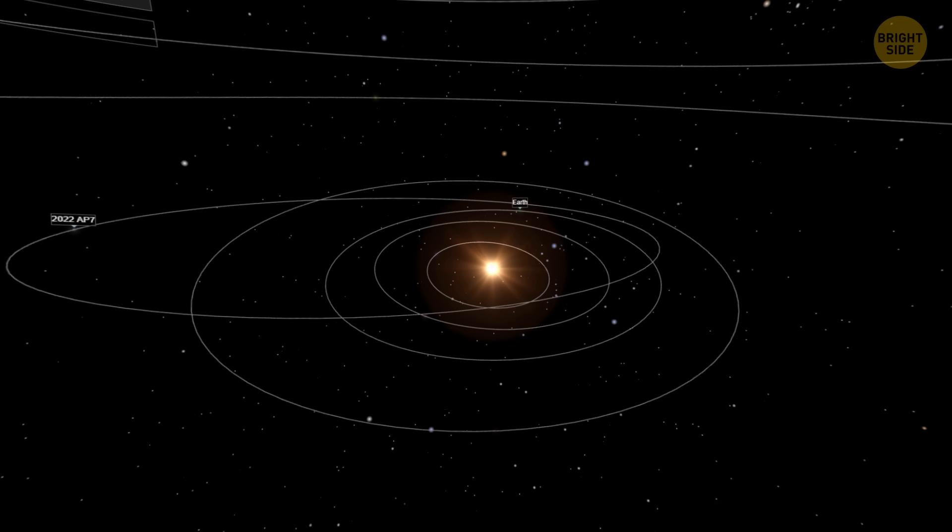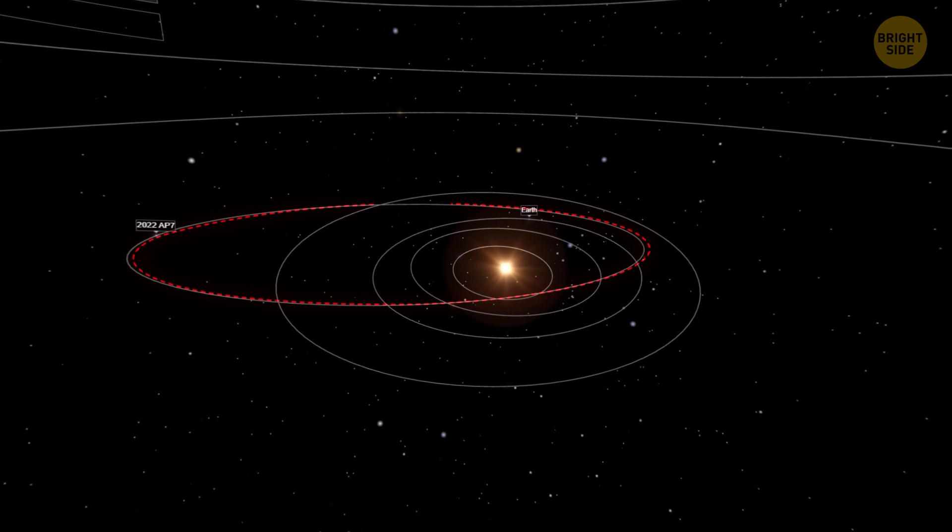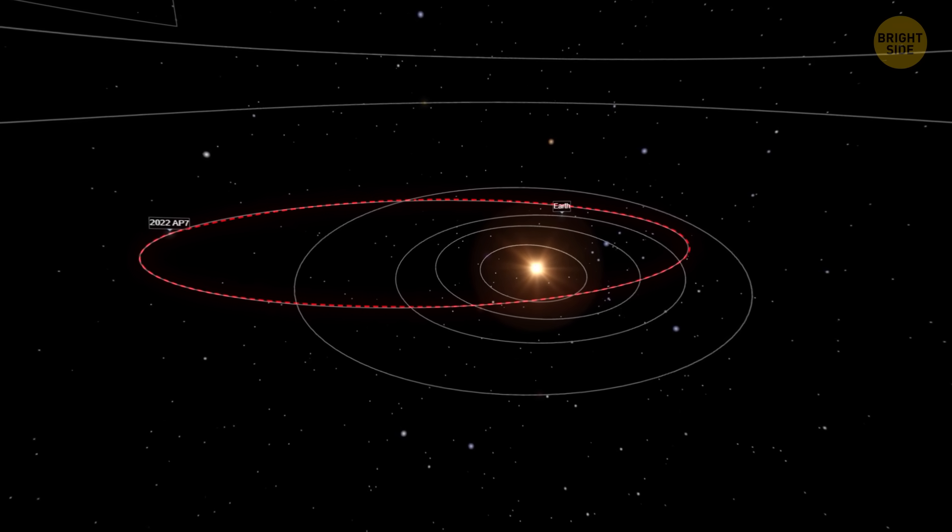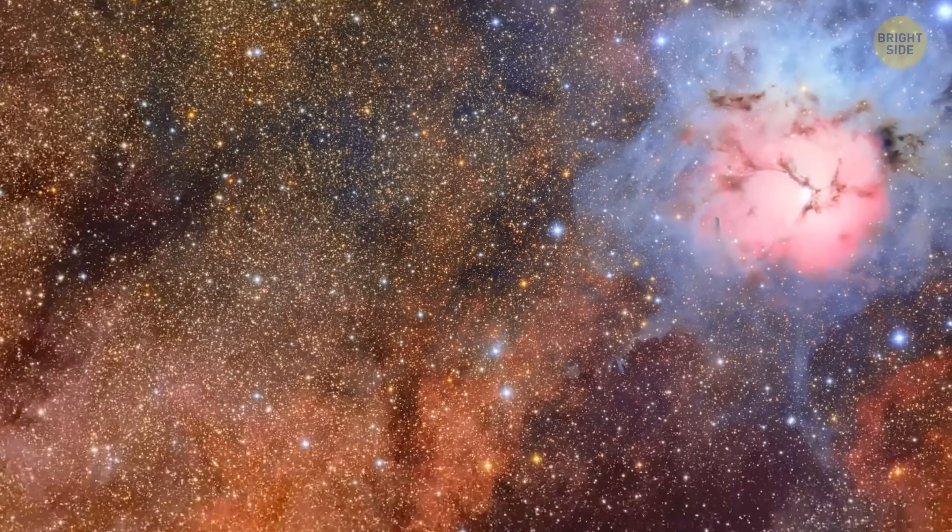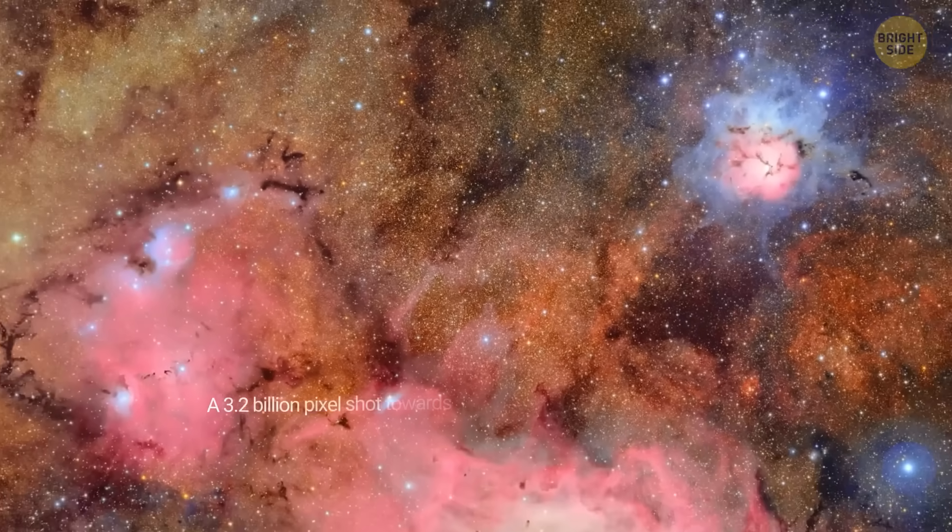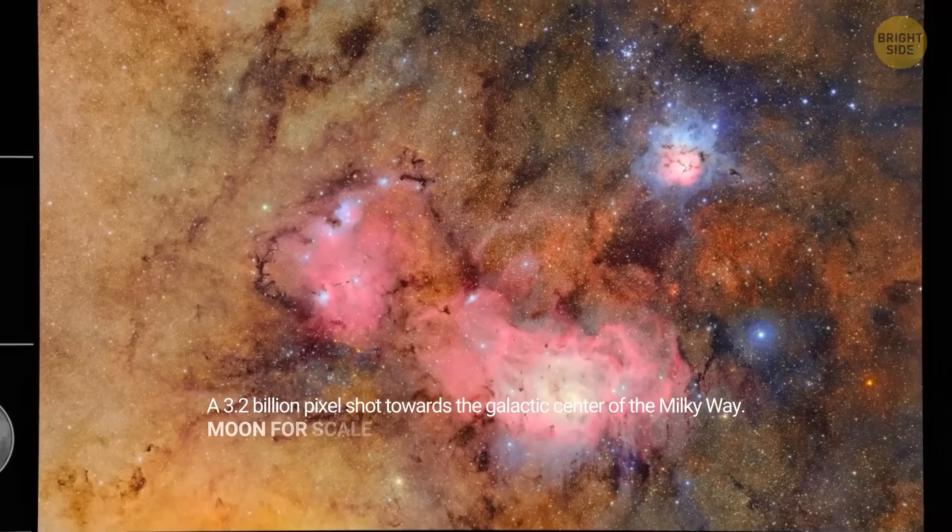The good news is that AP7 isn't headed straight for Earth. Its orbit crosses the orbit of our planet, but the timing doesn't line up, so we won't encounter it this pass, the next one, or even for several centuries. The bad news is what that discovery hints at. If it took this much effort to notice something like this, what else are we missing?